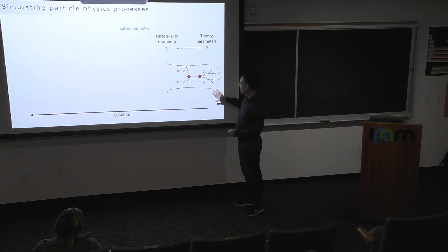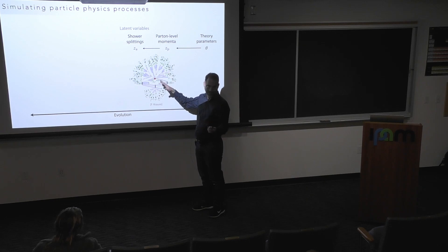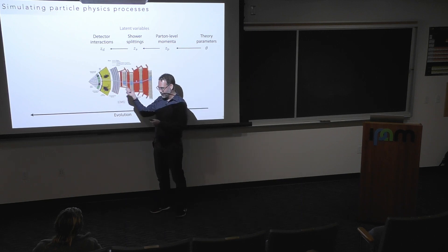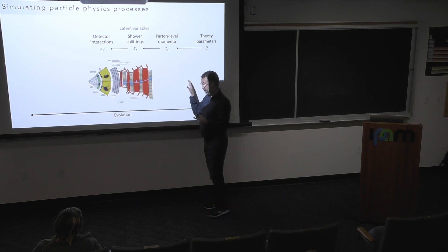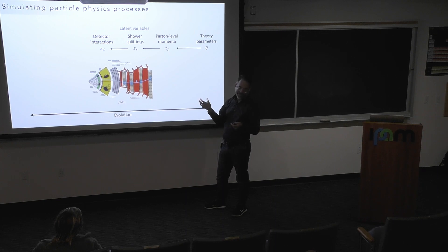In that process, there are random variables I don't observe — latent variables. There are more latent variables here, and note that the number of latent variables is not constant; it's a variable number of things — a branching process. So it's difficult to work with. When it hits the detector, the number of scatterings is also random. The number of latent variables for one collision at the LHC in our simulation chain is on the order of hundreds of millions, and collisions are happening 40 million times a second. So it's challenging.